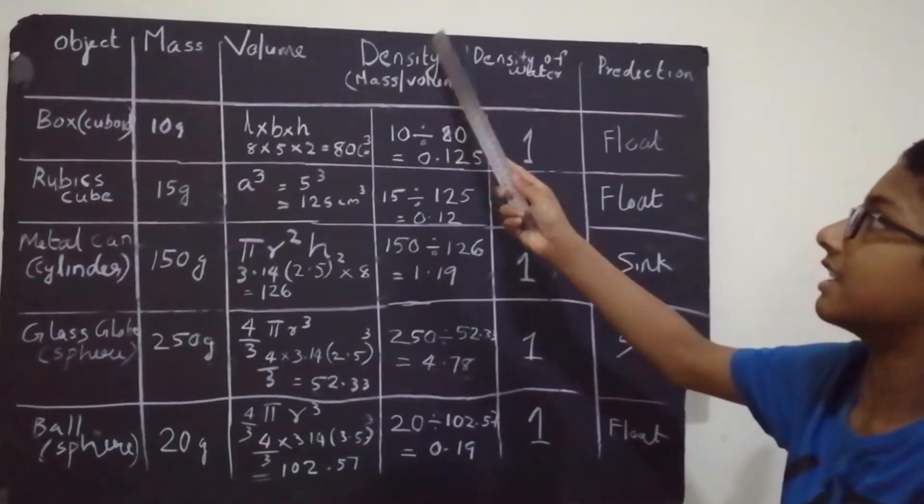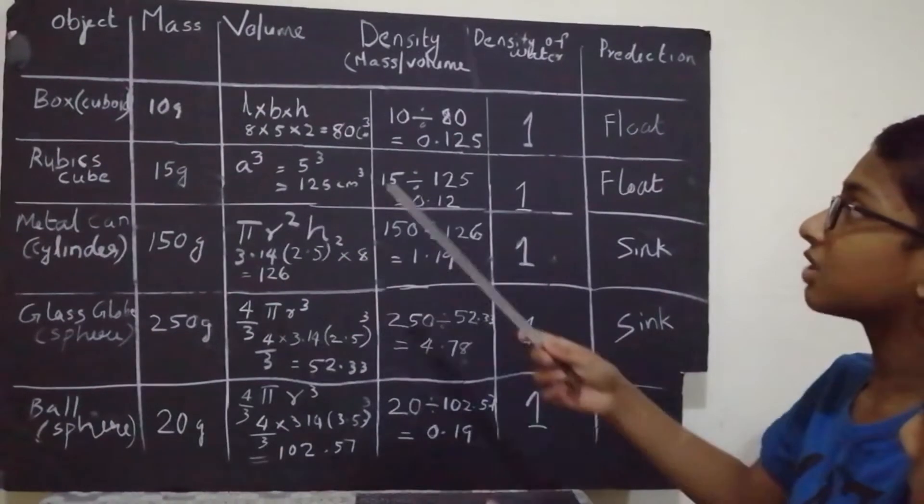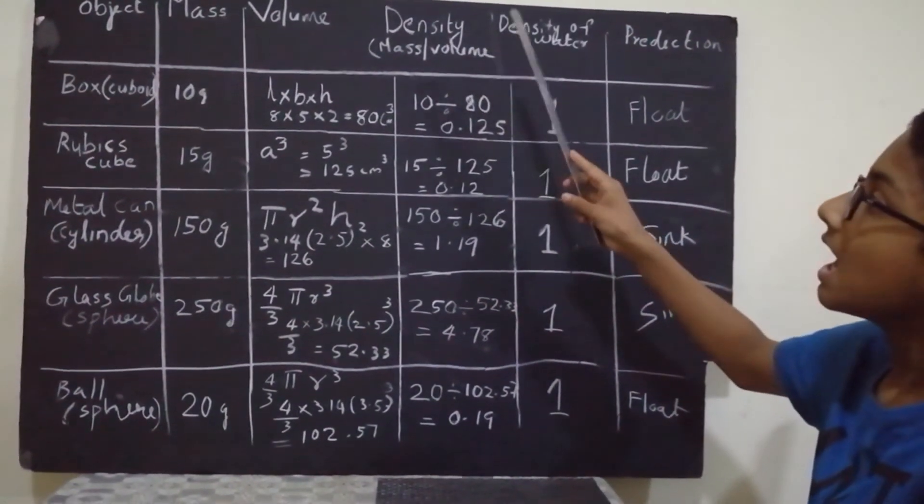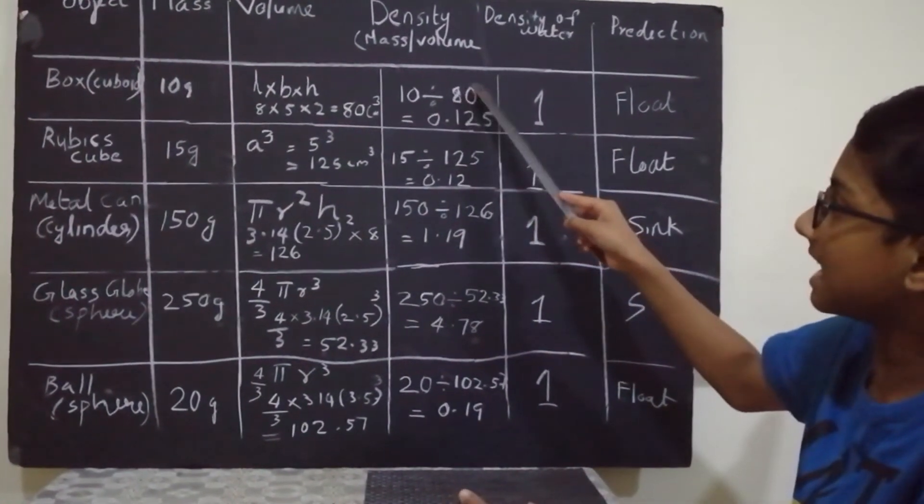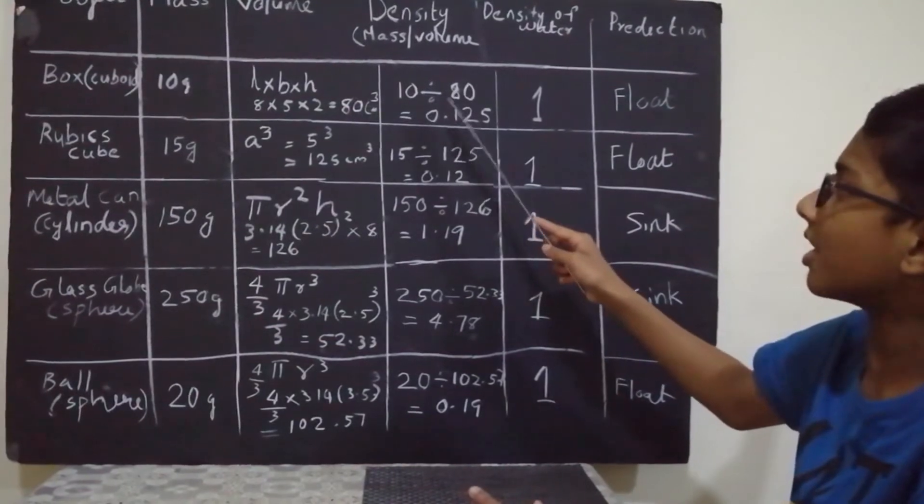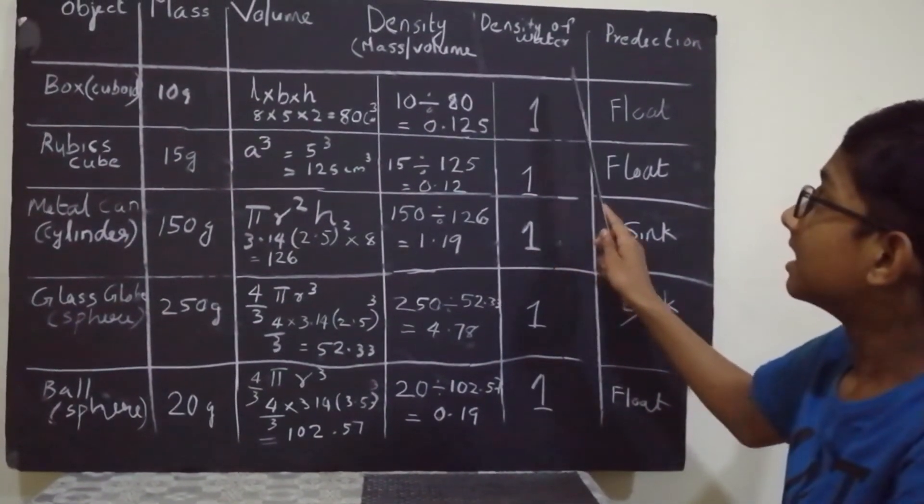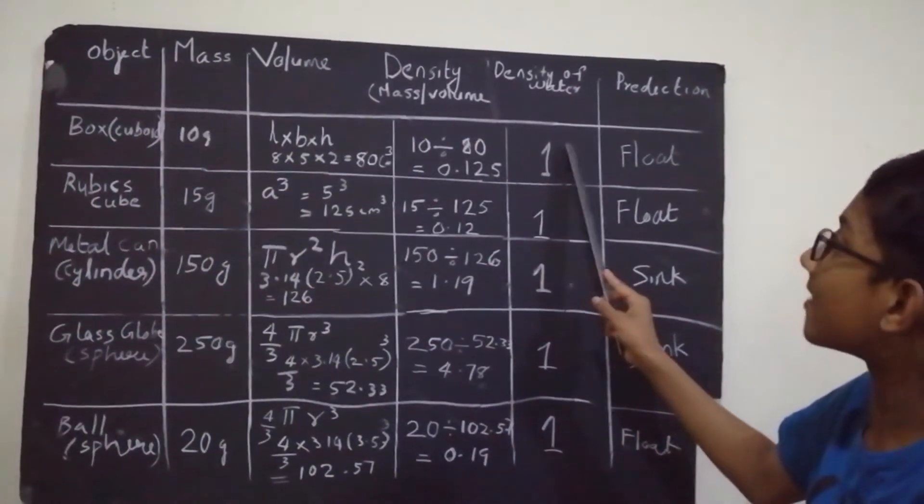Now, we need to find the density of this object. The calculation for finding the density is mass divided by volume. 10 divided by 80 equals 0.125, which is lesser than 1. The density of water is always 1. If it is lesser than 1, it floats.